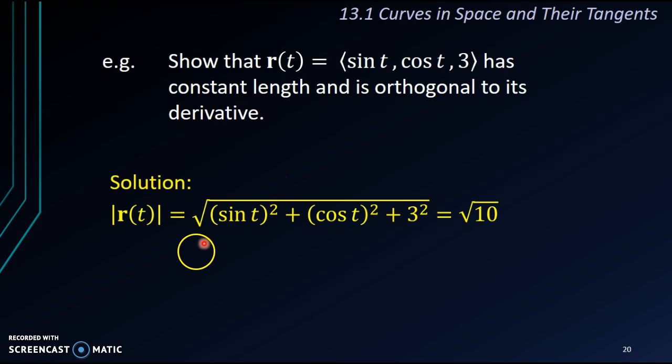That is square root of sin t squared plus the square of cos t plus 3 squared. This one gives us 1. So we have square root of 10. That is the length of r(t). You can see from here, we don't have any more t. No more t means the magnitude is a constant.